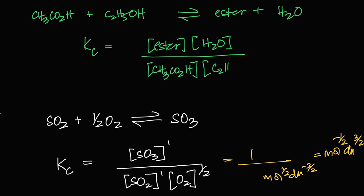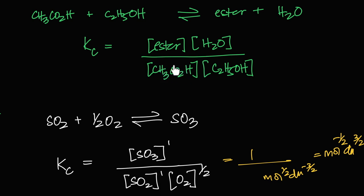For esterification, the Kc expression is [ester][water] over [acid][alcohol]. In this case the units cancel out. Importantly, these are the concentrations at equilibrium — not before. The ratio of concentrations after equilibrium is achieved will always be a constant, regardless of how many moles you start with or how many times you run the experiment. That's the beauty of Kc, which we'll use to find yields.